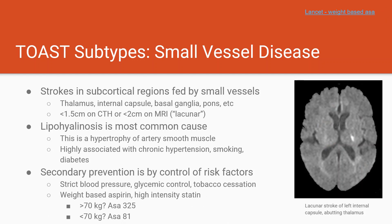The next major TOAST subtype is small vessel disease. As the name suggests, it involves the small vessels of the brain that typically feed the subcortical regions. Affected structures include the thalamus, internal capsule, basal ganglia, and brain stem. These strokes are typically very small — usually smaller than two centimeters — and you'll hear them referred to as lacunar strokes. Small vessel disease is caused by lipohyalinosis, which is hypertrophy of the arterial smooth muscle, eventually clamping off the vessel and causing distal ischemia. It's most associated with chronic hypertension, but also smoking, diabetes, and other similar causes.